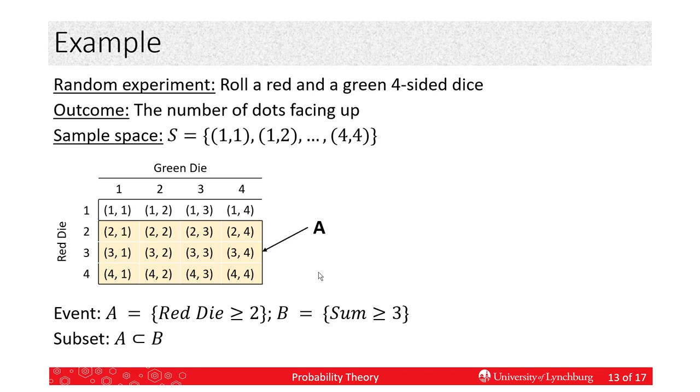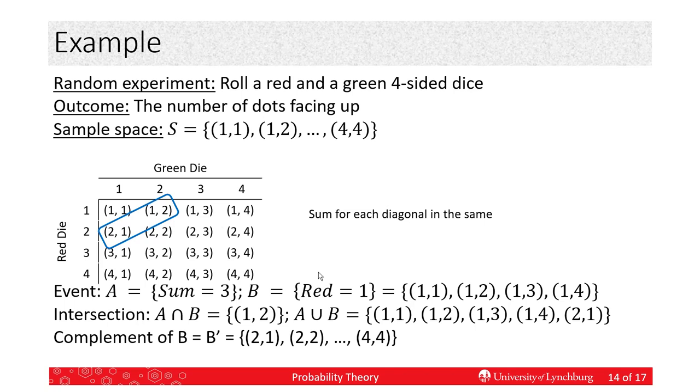So, we can also notice that for each diagonal, the sum is the same for all of the values in the diagonal. So, the one that I have listed here, the sum is three. The next is four. The next is five, six, seven, eight, et cetera. So, the diagonals have the same values. This is handy to know for some of the problems.